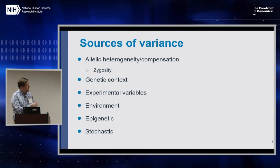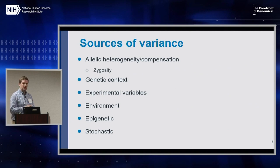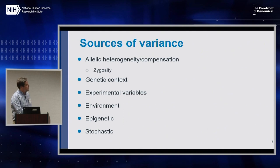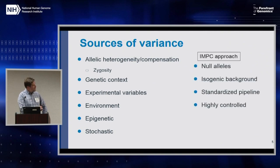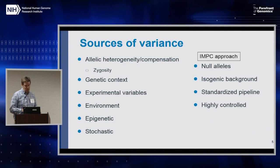We've talked about different sources of variability, including allelic heterogeneity and compensation. The zygosity of the allele actually makes a difference — as in the example Gary presented of F1 crosses to multiple inbred strains, modifying expression of the existing gene copy. We've also heard about genetic context, experimental variables, the environment, epigenetic effects, and stochastic mechanisms. What I wanted to note is that the IMPC approach accounts for many of these in a very specific way, which focuses our thoughts down to epigenetic and stochastic mechanisms. Stochastic mechanisms in particular are probably at play in a lot of our mutants.